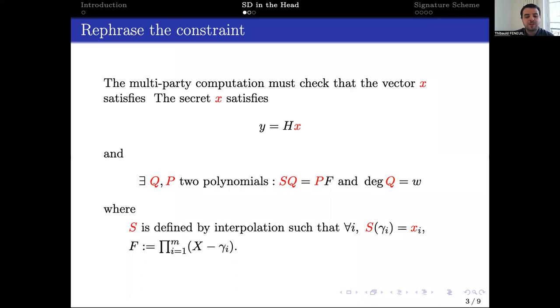This new constraint consists to prove the existence of a polynomial Q, such that F divides the product S·Q, where S is a polynomial for which the evaluations at some public points give the coordinates of the tested vector, and F is the smallest polynomial which has, as roots, all those evaluation points.